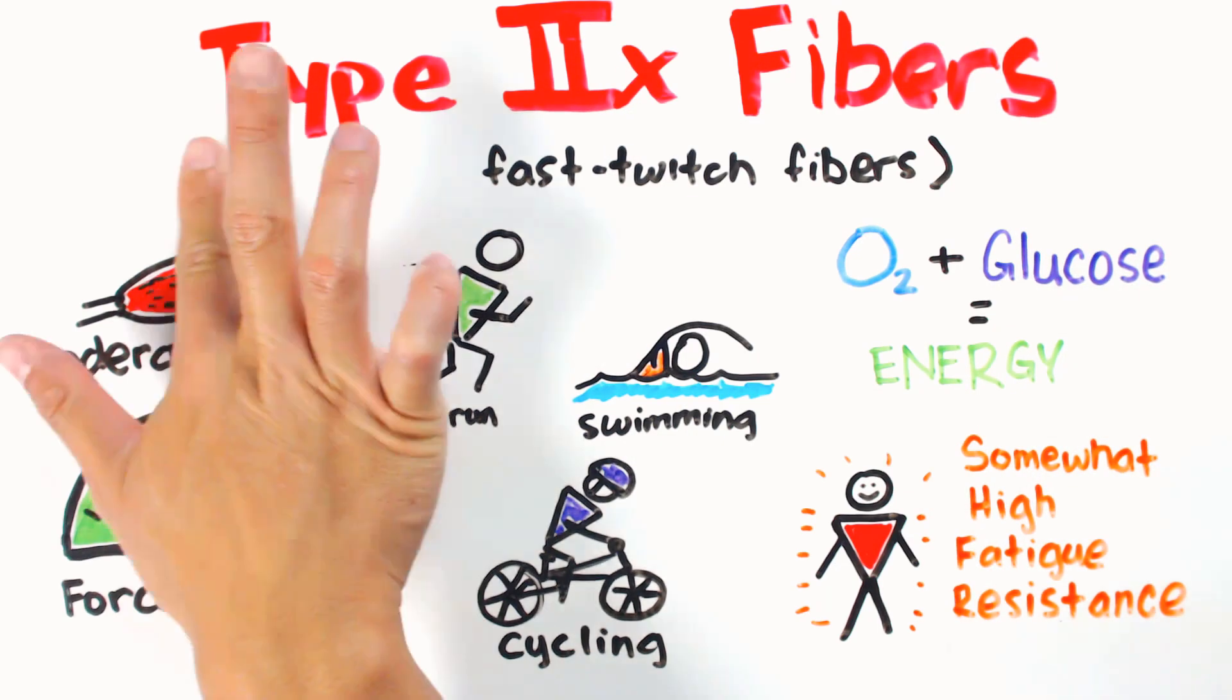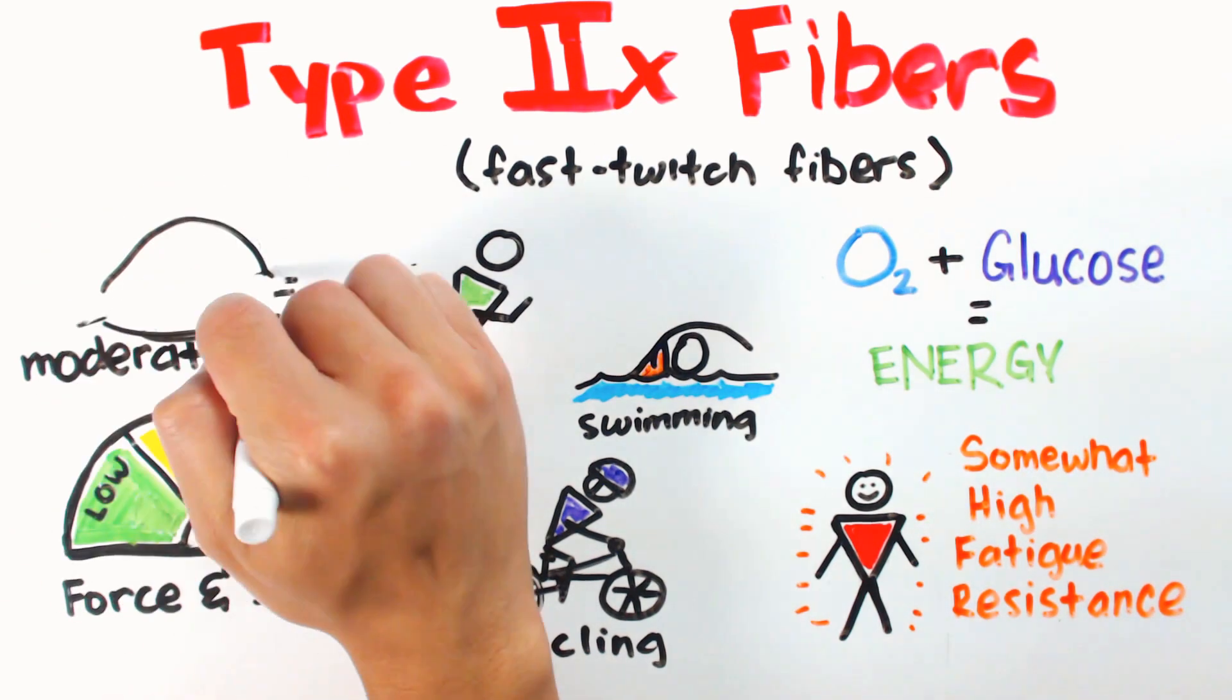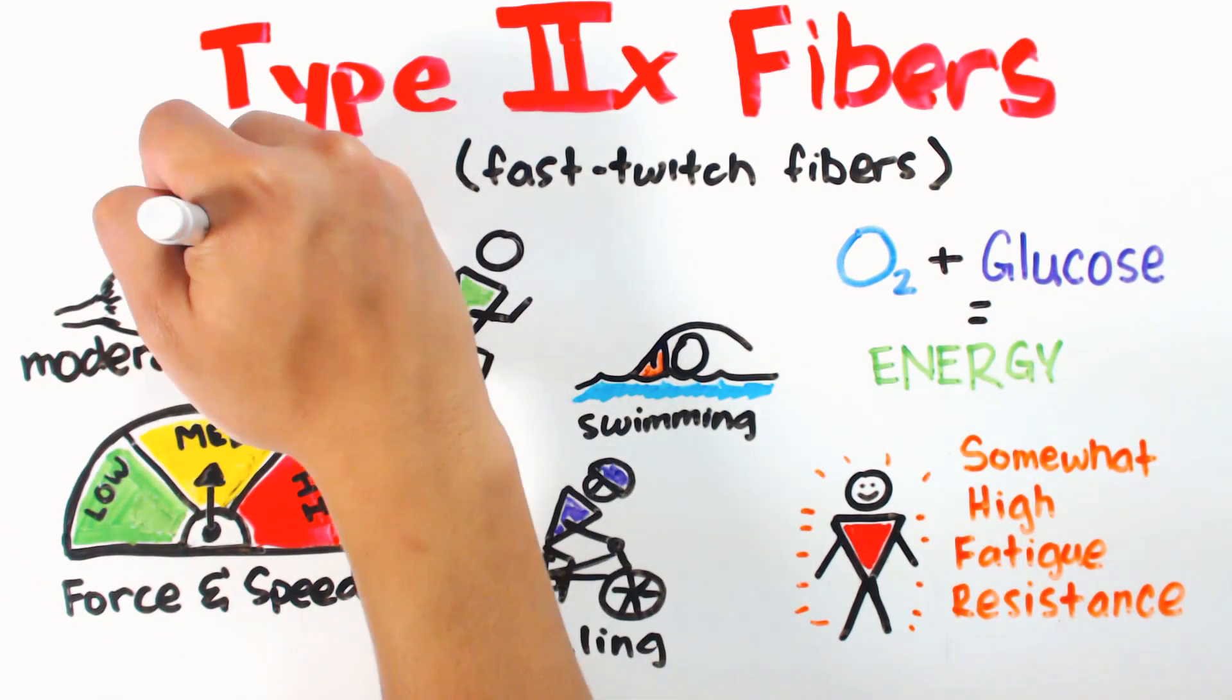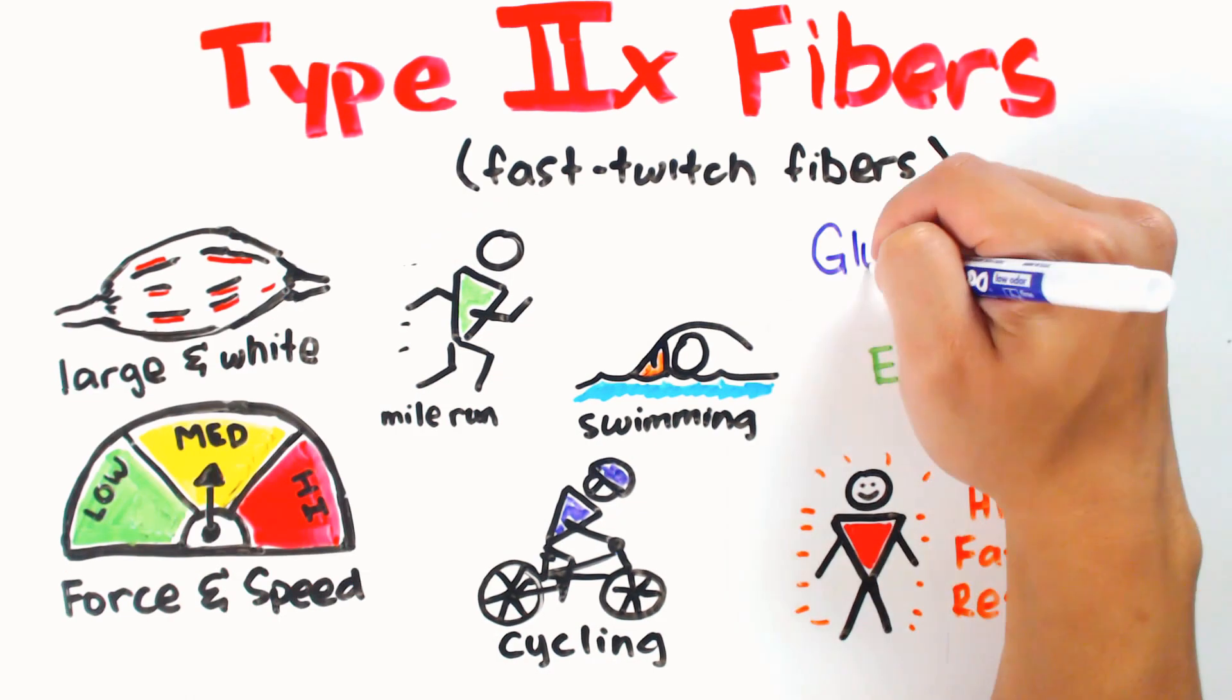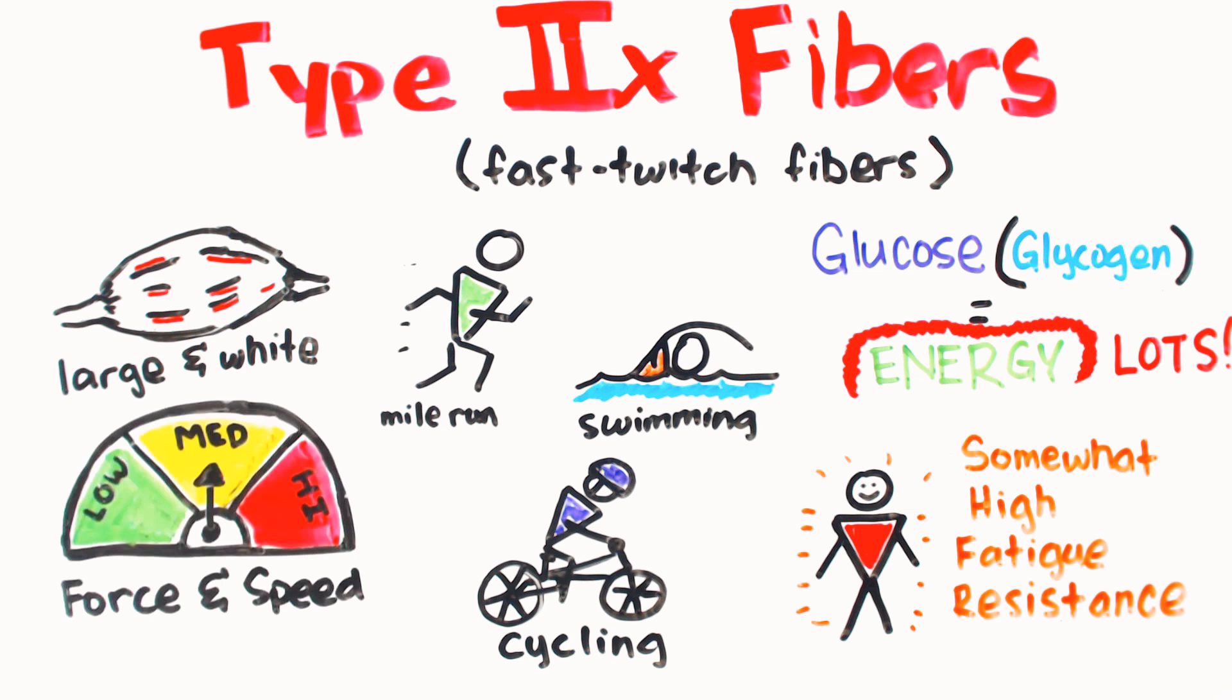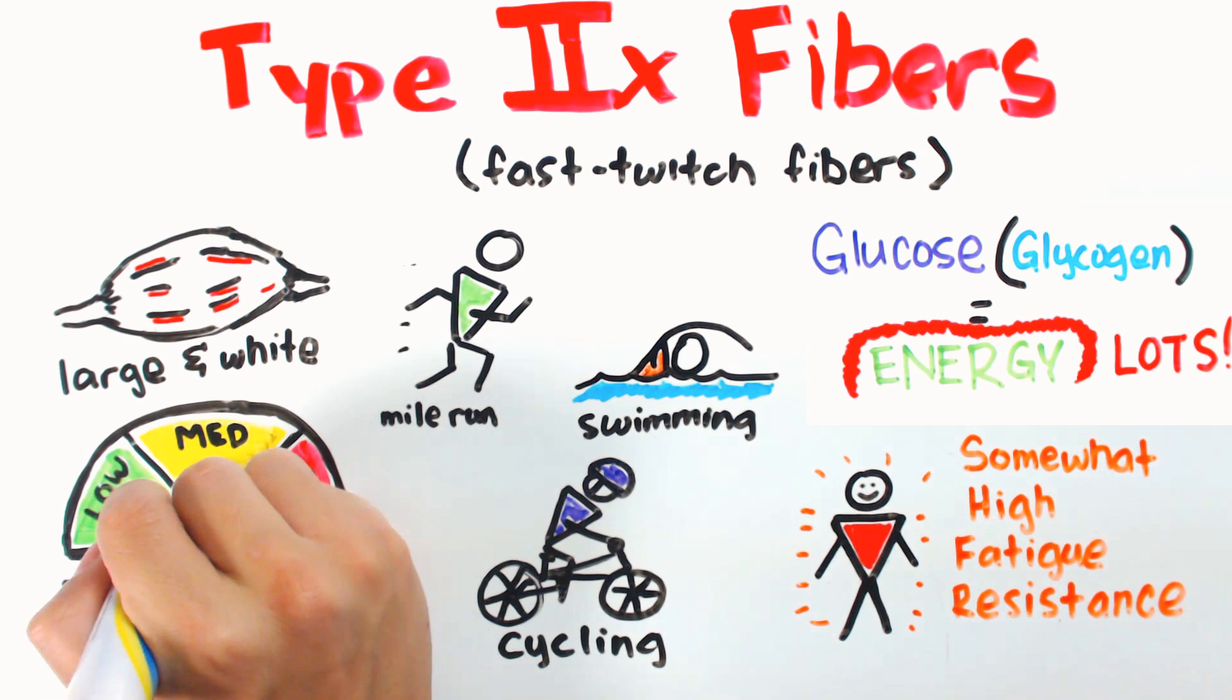Type 2x fibers, aka fast twitch fibers, are white in color due to the low oxygen capacity and by far the largest fiber type. It makes up for the lack of oxidative capacity by having extremely high levels of glucose in its stored form of glycogen, producing the fastest twitch speeds and the most force.